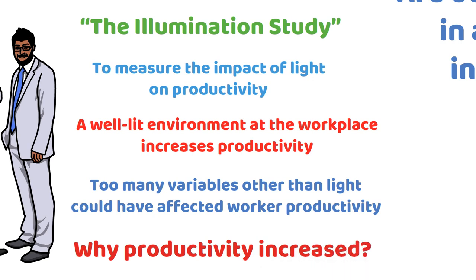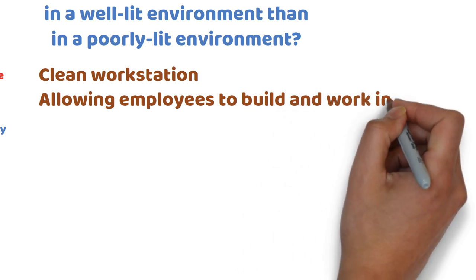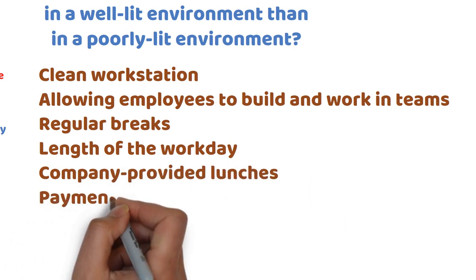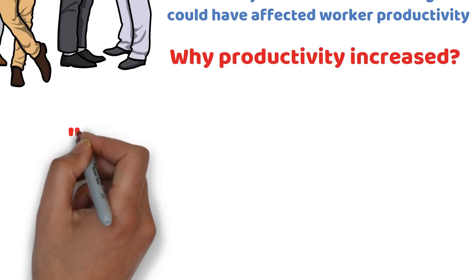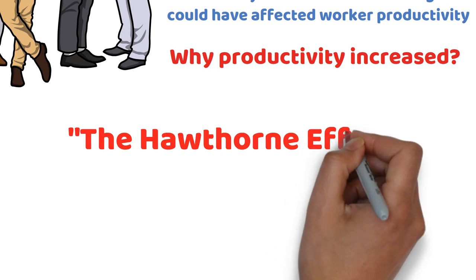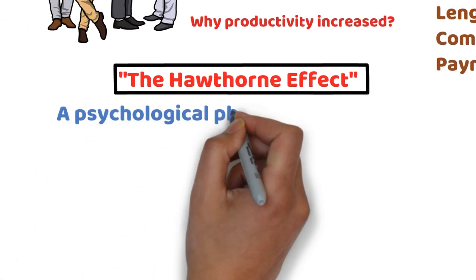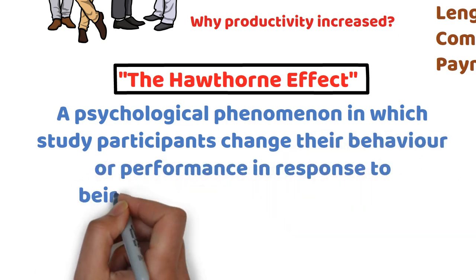Later on, a series of other studies were conducted at Hawthorne Works. It was observed that working conditions such as a clean workstation, allowing employees to build and work in teams, regular breaks, length of the workday, company-provided lunches, and payment methods influence productivity. But the researchers made another observation that led to an idea taught in nearly every business textbook for decades: the Hawthorne Effect. The Hawthorne Effect is a psychological phenomenon in which study participants change their behavior or performance in response to being observed by the researcher.